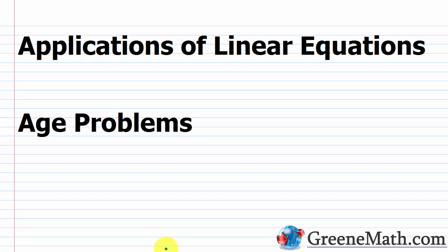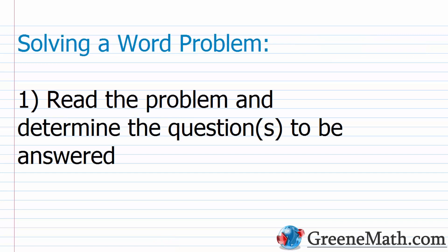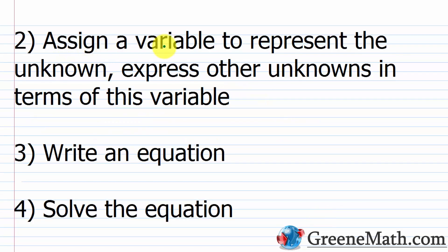In this lesson, we want to review applications of linear equations and look at some examples of age problems. Whenever we're working with an application problem involving a linear equation in one variable, we can use our six-step procedure. For solving a word problem: read the problem and determine the question or questions to be answered; assign a variable to represent the unknown; express other unknowns in terms of this variable; and write an equation based on the situation given.